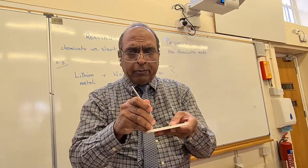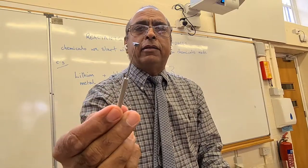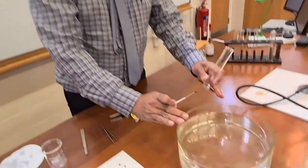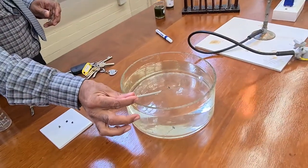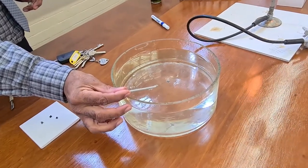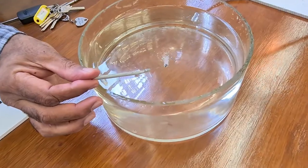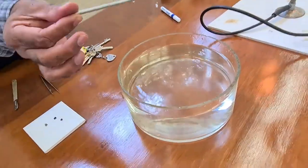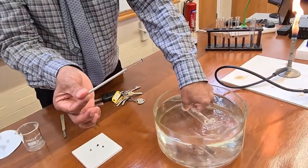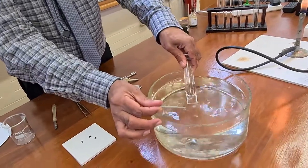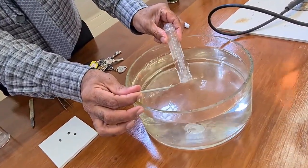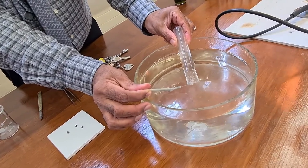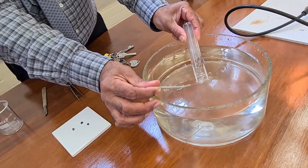I take one little piece of lithium and drop it into the trough. Lithium metal fizzes in water — in chemistry, fizzing means a gas is coming off. I'll fill a test tube with water and hold it over the lithium to collect the gas. I can then try to identify what that gas is. I believe the gas is hydrogen.